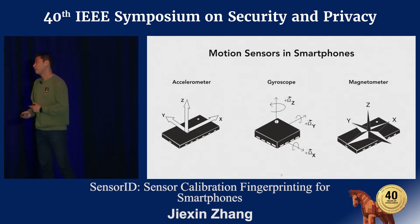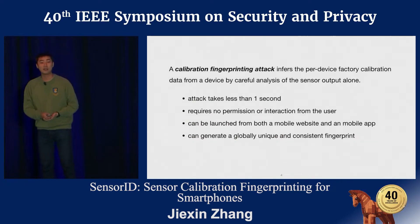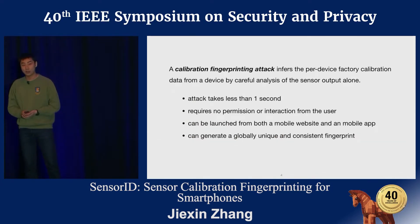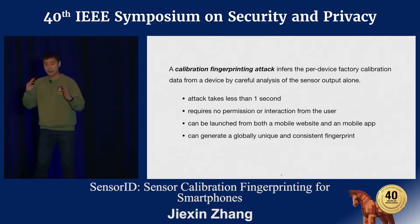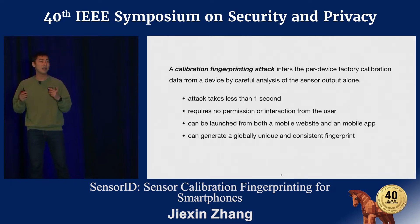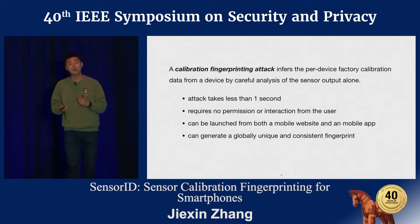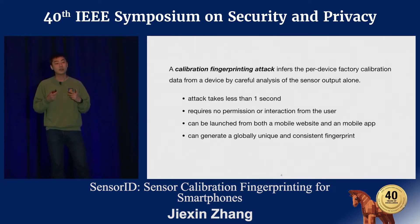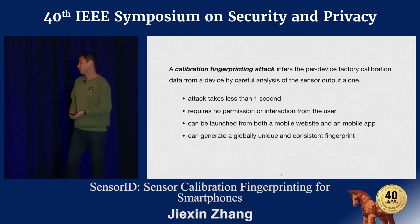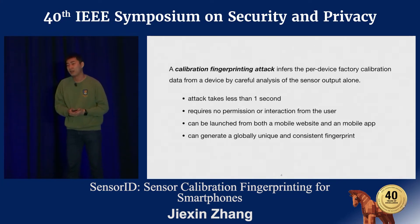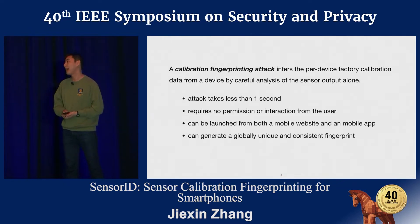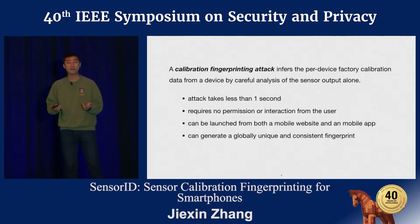We find that this is pretty dangerous because we have proposed a new type of device fingerprinting attack, which we call the calibration fingerprinting attack. This attack works by inferring the calibration data of these sensors by simply analyzing the sensor outputs, which does not require any permission. We can use the calibration data — since calibration is most likely per-device — to uniquely fingerprint every device. This attack is extremely efficient and effective: the whole attack takes less than one second, can be launched from either a website or an app, and can generate a globally unique identifier even for homogeneous devices such as iPhones or iPads.